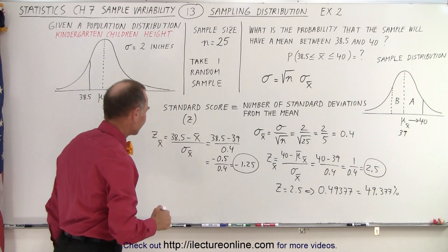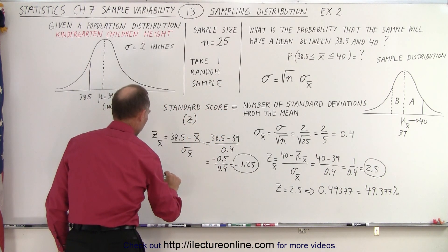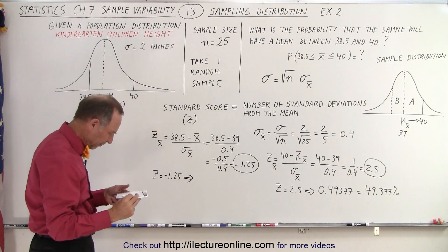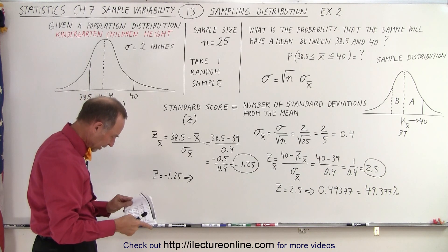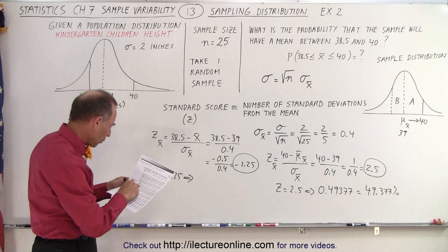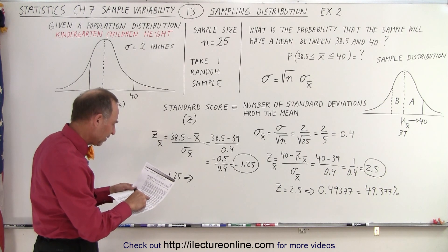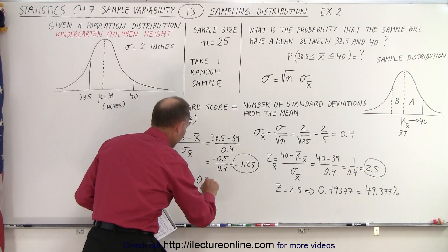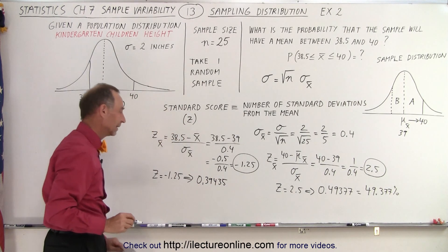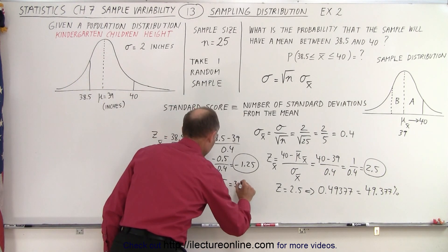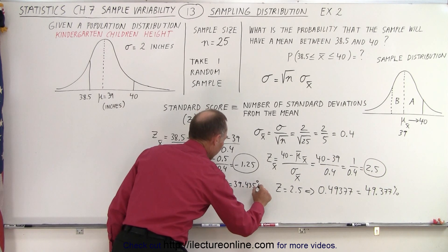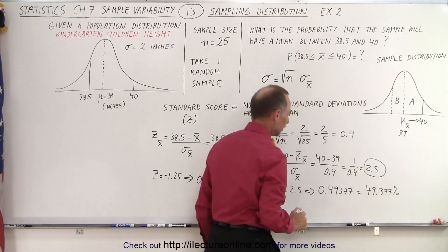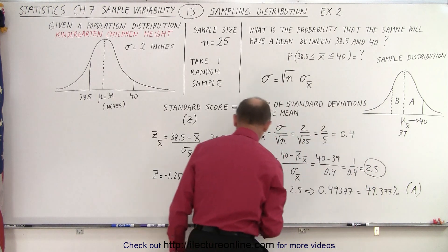For the left side, Z equals minus 1.25. Looking up 1.25 in the table, I find 0.39435, which equals 39.435%. This is the probability region to the left side of the mean, represented by the letter B.